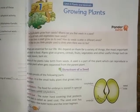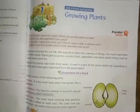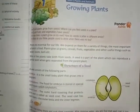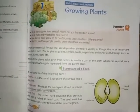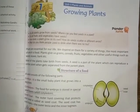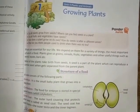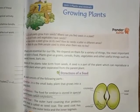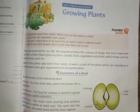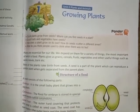The most important is food. Plants give us grains, cereals, fruits, vegetables and other useful things such as wood, leaves, bark, paper etc. Most of the plants take birth from a seed.